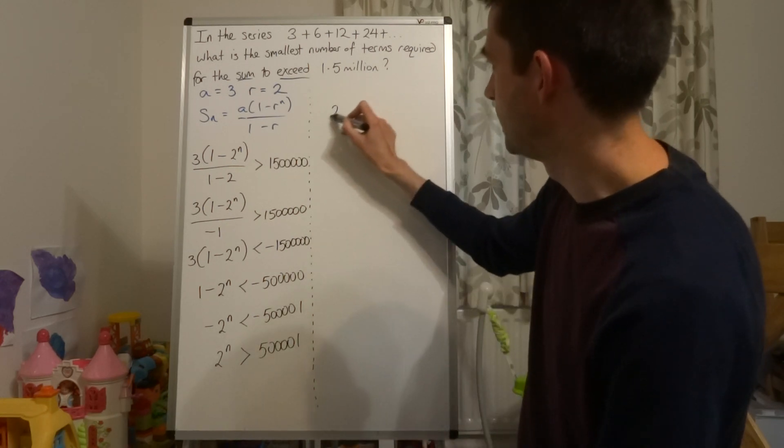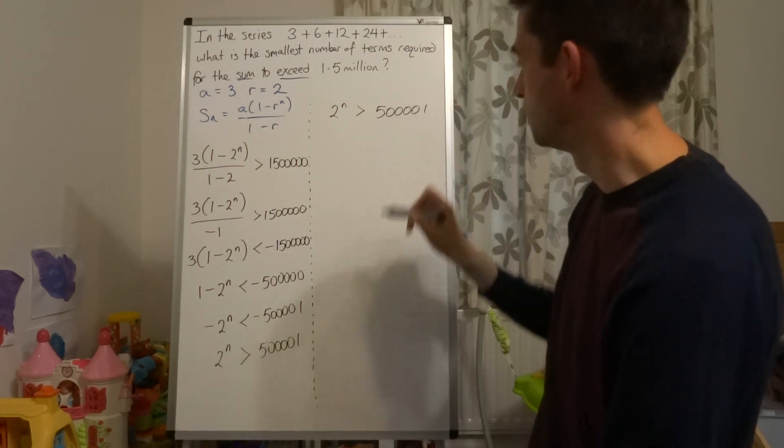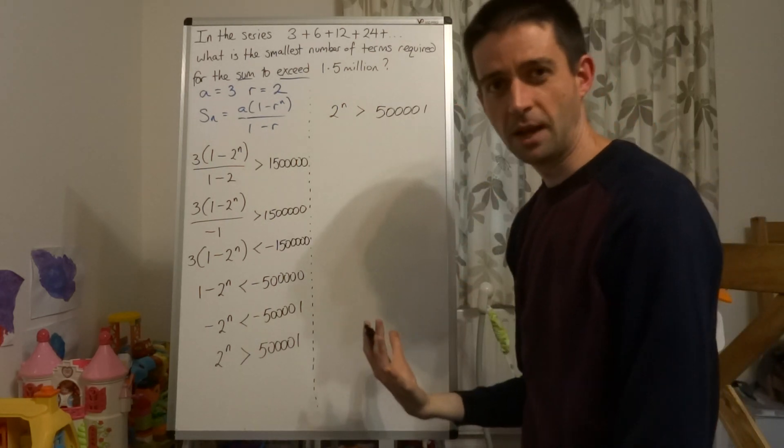So 2 to the power of n is now greater than 500,001. So I'll just jot that again up here so that we can work from that. 2 to the power of n is greater than 500,001. And now it's a case of how do we solve for n.